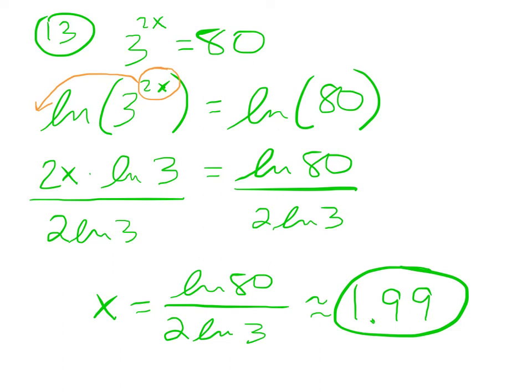If you plug 1.99 into your equation for x, you should get 80. So if I do 3 raised to the 2 times 1.99, I do in fact get 80.